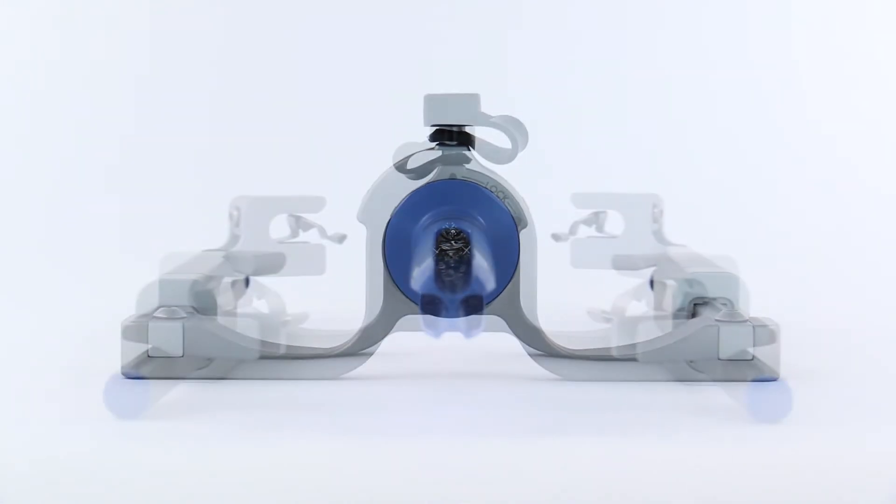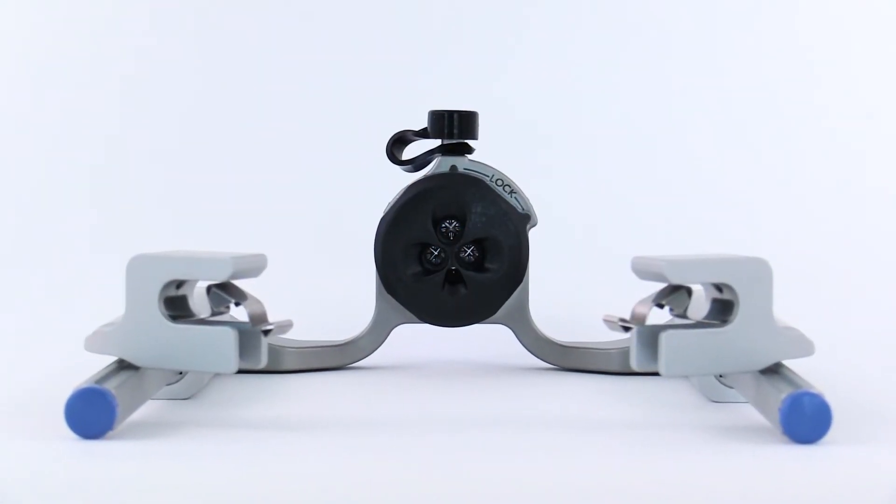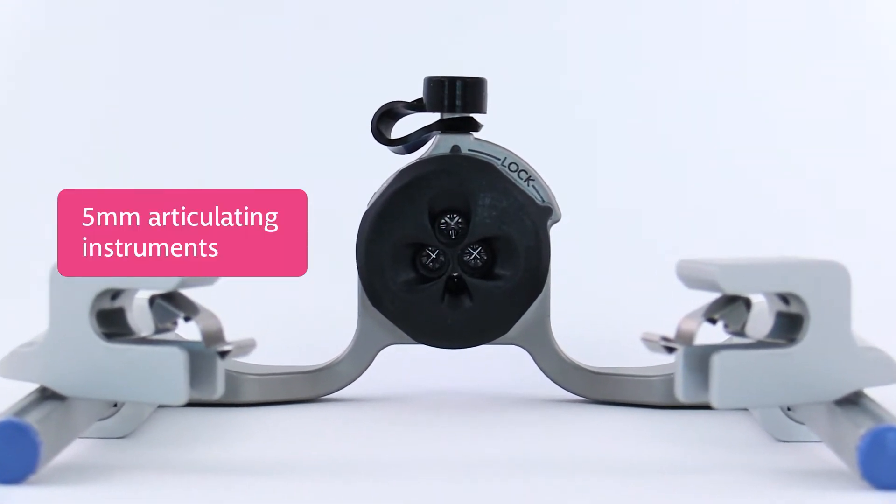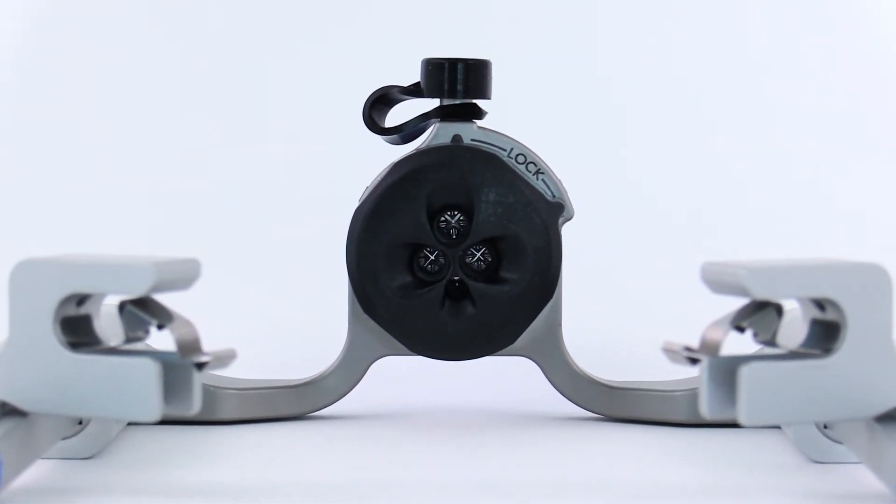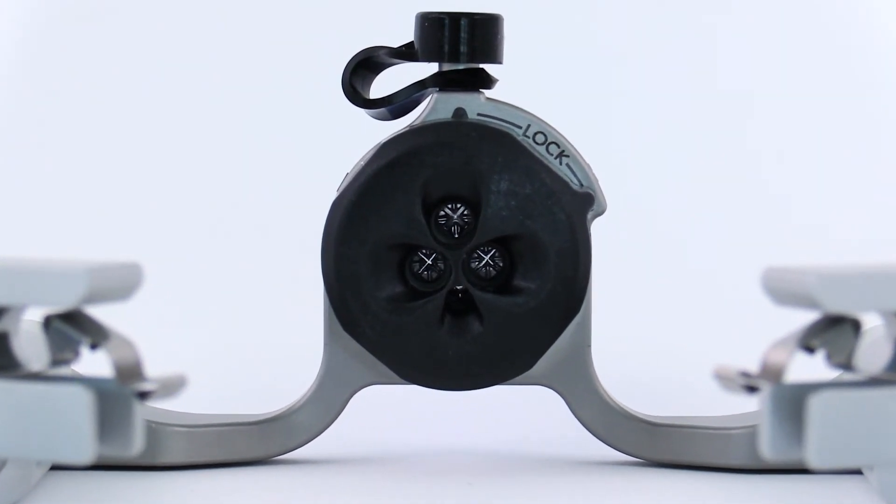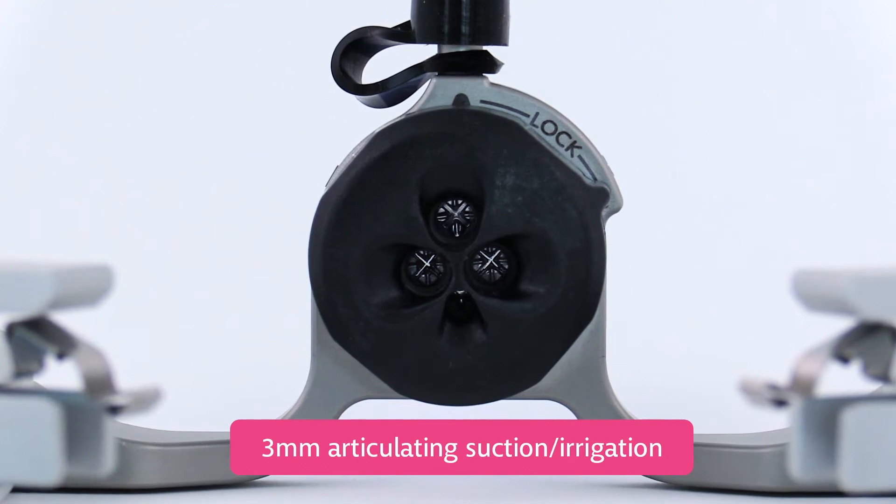Once stabilized inside the trocar, the introducer's four access ports can accommodate various devices. There are two lateral ports for the 5 millimeter Symphonics instruments, a superior port for a 5 millimeter laparoscopic camera and an inferior port for suction and irrigation.